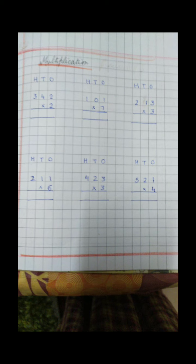Let's see: 342 into 2. Simple. 2 twos are 4 — we will write down 4. Then 2 fours are 8 — before 4 we will write 8. And 2 threes are 6 — then in the front, on the top place, we will write 6.